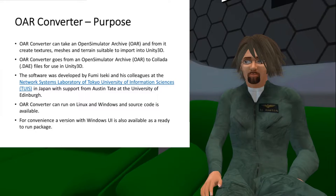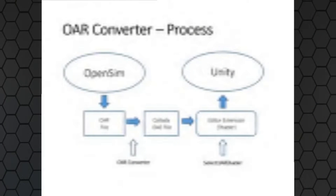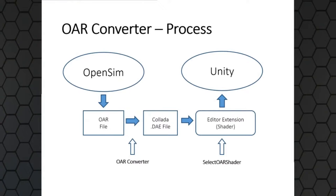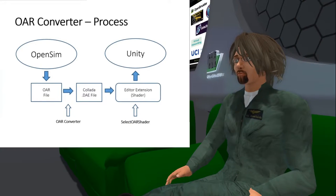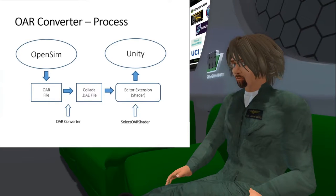What I'm going to be talking about today is mostly that Windows tool. The workflow is pretty straightforward: you go from OpenSim to an OAR file using the save OAR console command. Once you've got the OAR file, you run the OAR Converter in two steps — loading the OAR file and then creating the output Collada DAE file. That DAE file is then input to Unity, but it's done through a specially written shader — a way of modifying content as it's brought into Unity or as it's displayed.